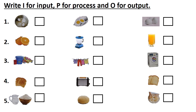Question number 3: beside the first image write input, beside the second image output, and beside the third image process — because we put dirty clothes in the washing machine and after washing we get clean clothes. So dirty clothes are input, the washing machine is the process, and clean clothes are the output. For question number 4, beside the first image write output, beside the second image process, and beside the third image input. For question number 5, beside wheat and water write input, beside the second image write output, and beside the third image write process.